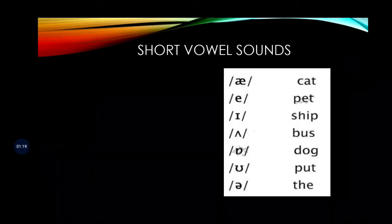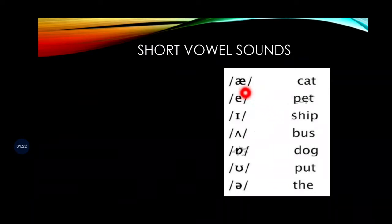We had discussed these short vowel sounds earlier as well, like cat, pet, ship, bus, dog, put. These are all short vowel sounds, and you can see that the vowel is coming between the two consonants.